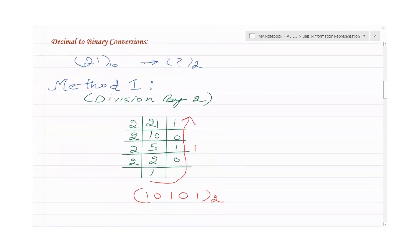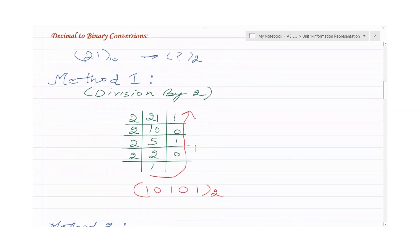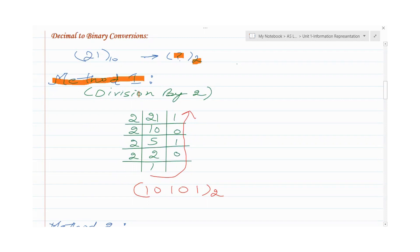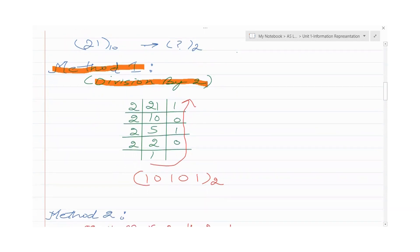Next is denary to binary conversion. We'll take the same number we got as an answer — 21 — and convert it back to binary so we can verify whether our earlier conversion was correct. I'll explain two methods. The first method is the division by 2 method. We divide the number by 2, which is the base of the target system.